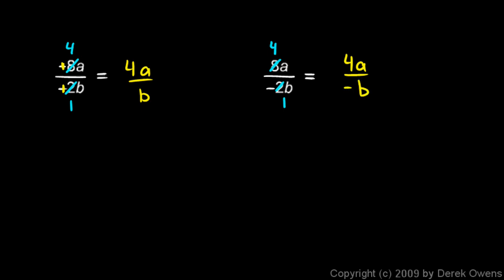And, again, it's not common to leave the negative sign like that in the numerator. I'm going to rewrite this as negative 4a over b. Although, you could also write it as negative 4a over b.